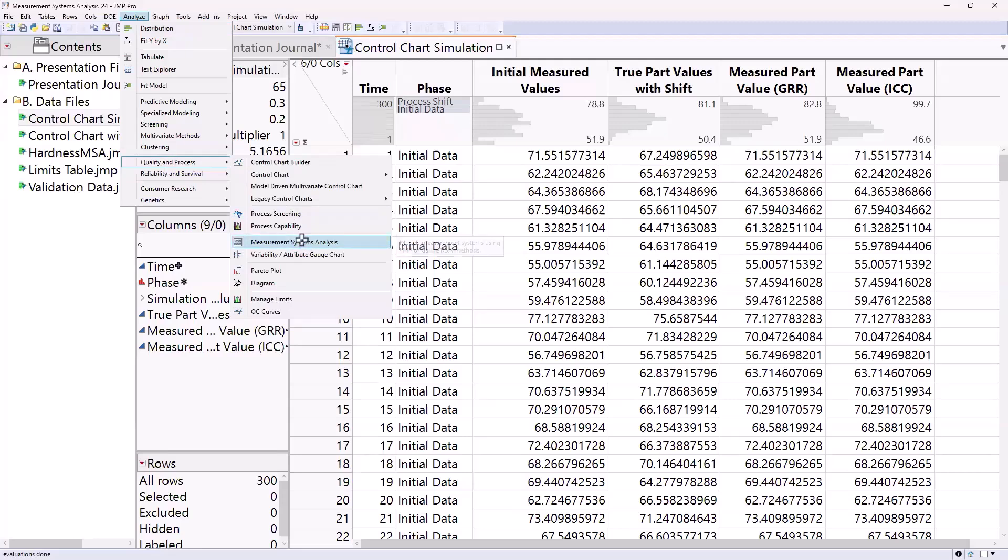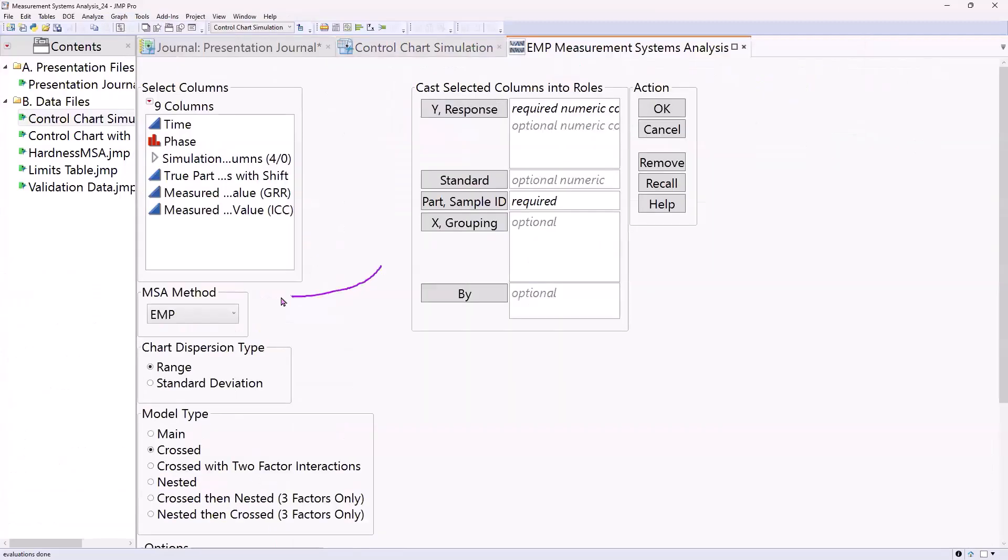The measurement systems analysis platform in JUMP uses the EMP method as the default. I want to spend a few minutes talking about EMP, then we'll jump into the case study and show you how to run through an analysis in the measurement systems analysis platform. So what is EMP?